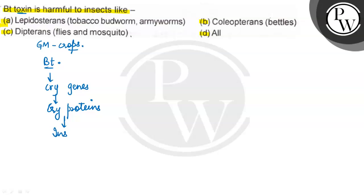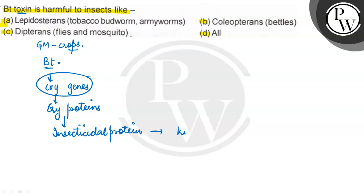So the insecticidal protein preparation — when we introduce this particular gene into plants, we will introduce the insecticidal proteins. So the insects which feed on it will be killed.